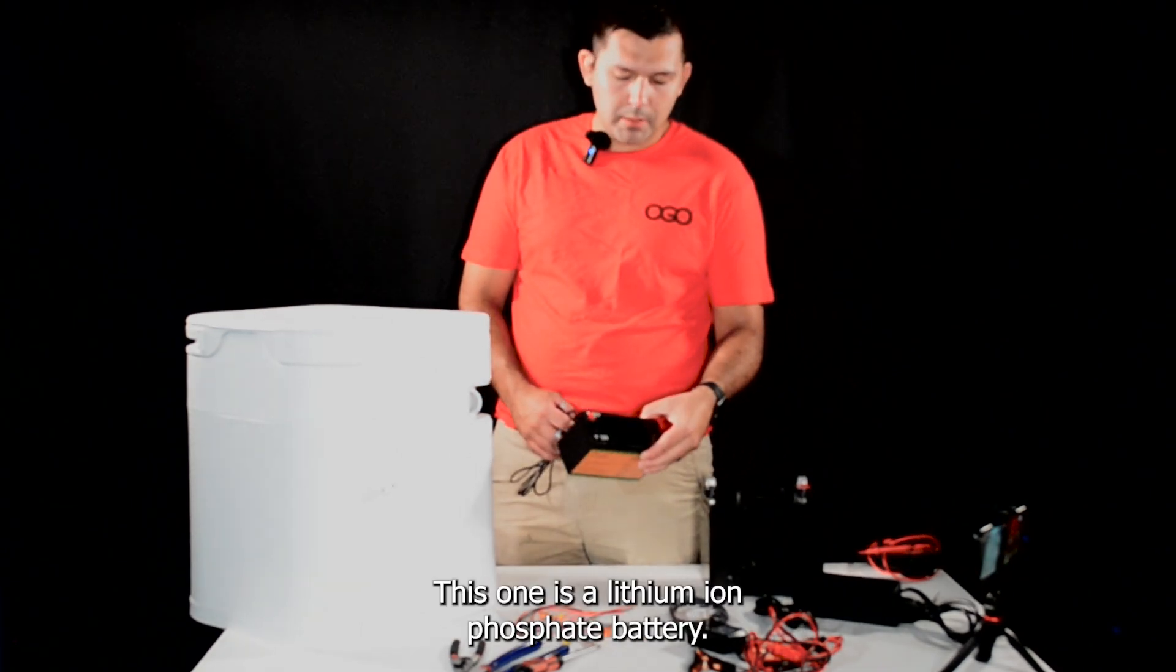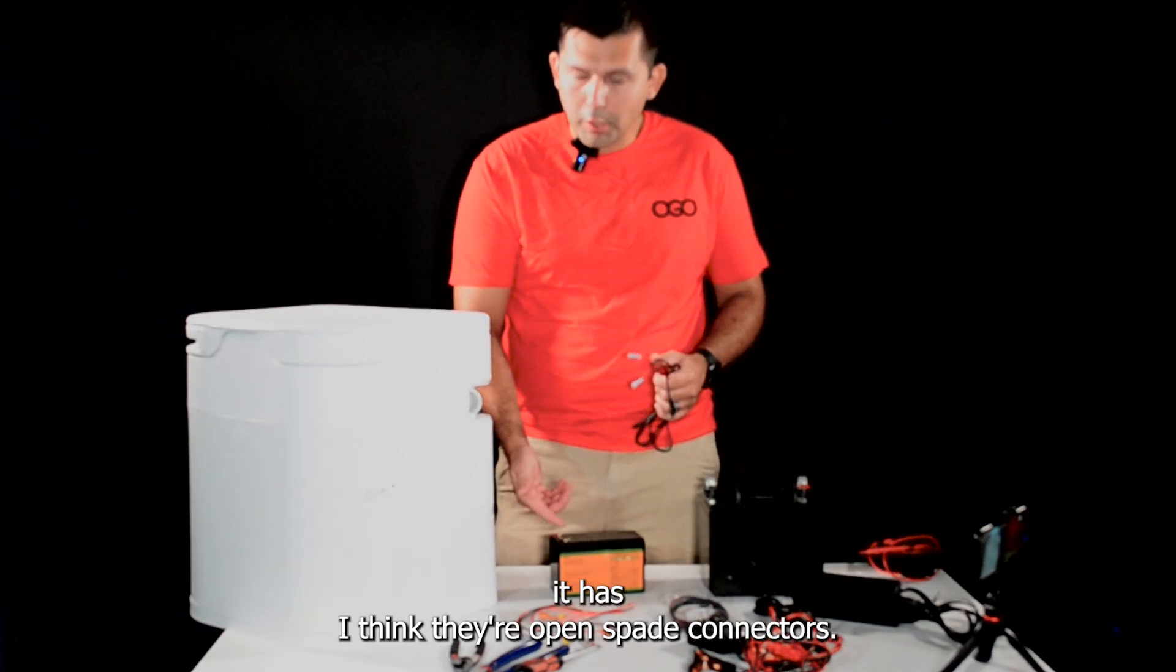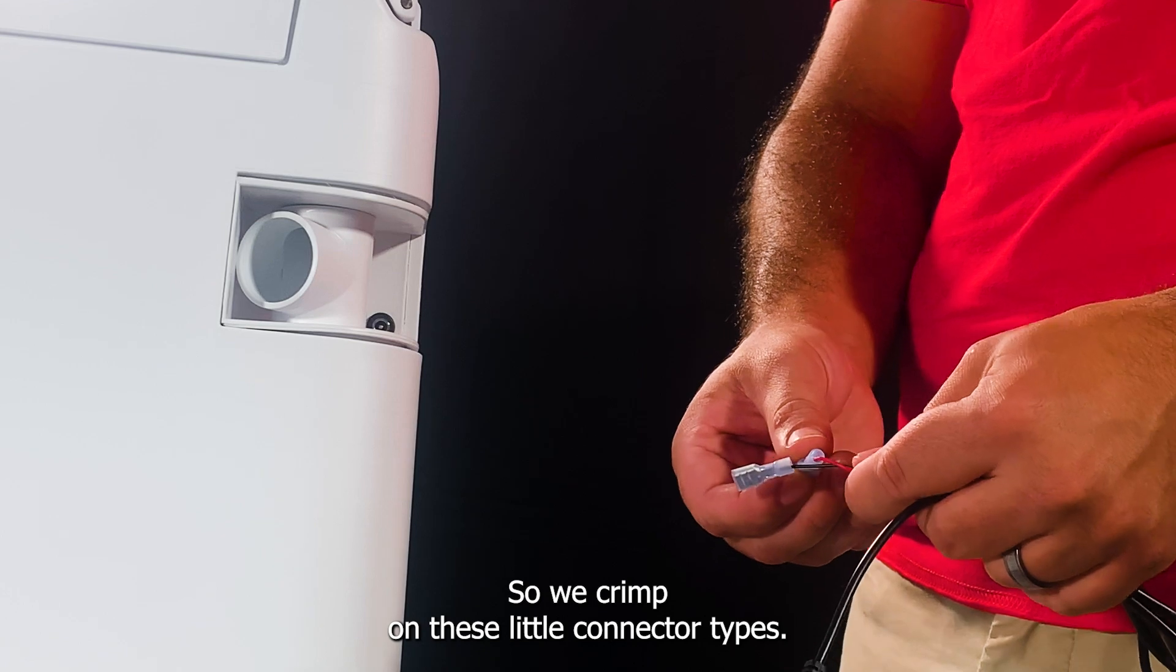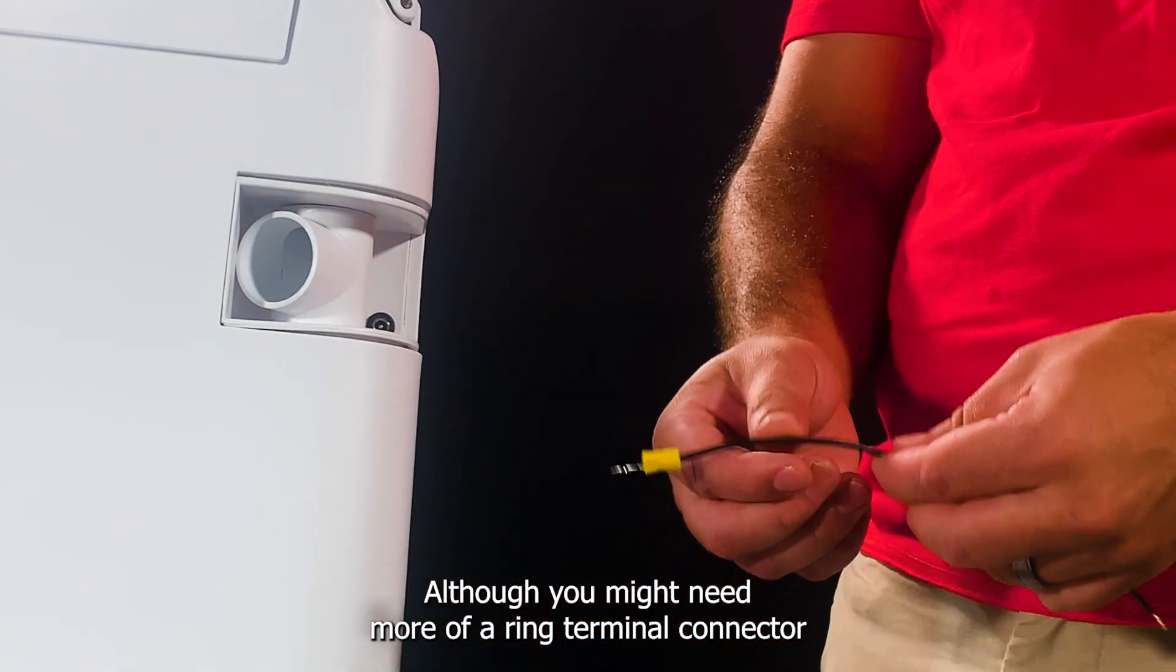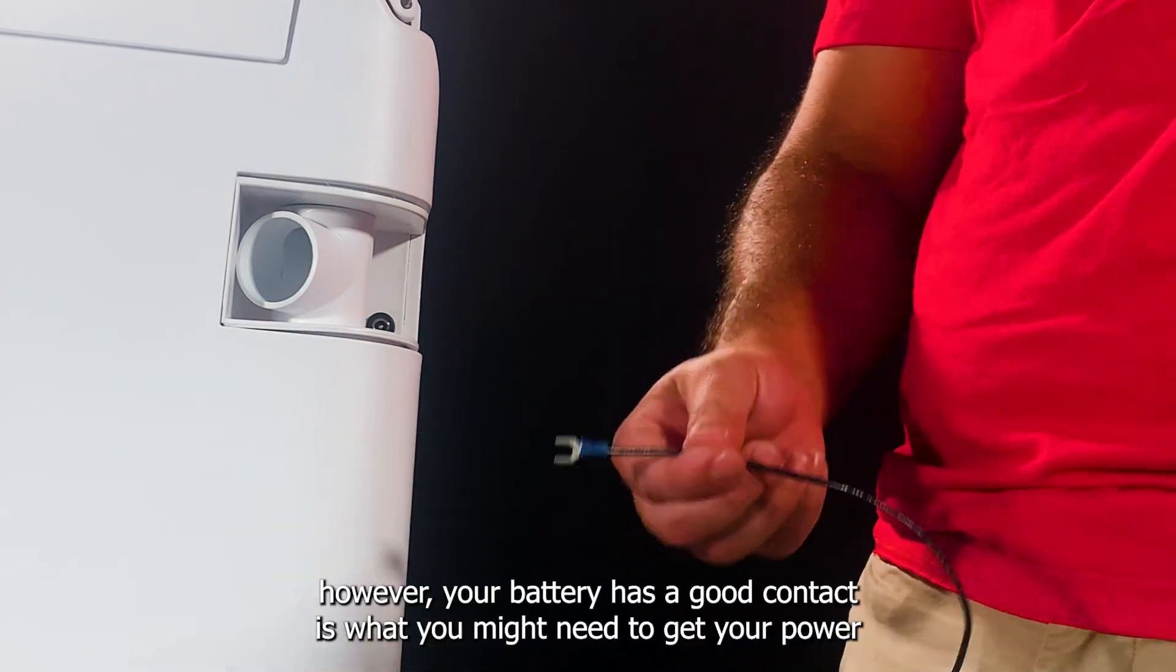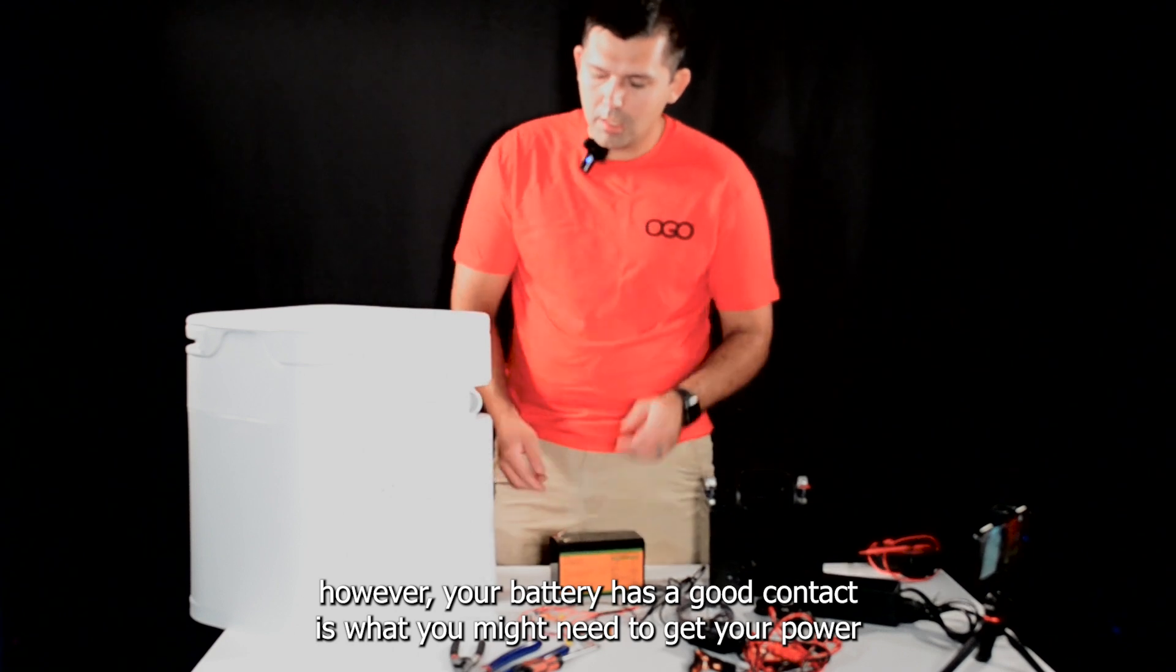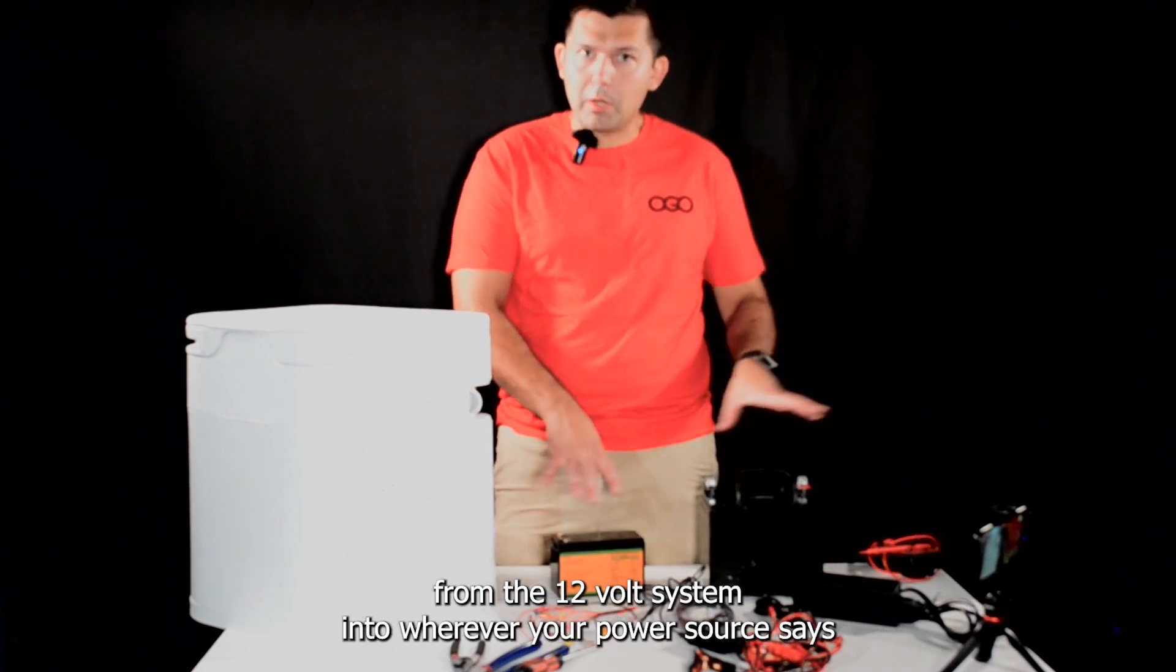This one's a lithium ion phosphate battery. It has, I think, open spade connectors, so we crimp on these little connector types, although you might need more the ring terminal connector or a more open spade. However your battery has a good contact is what you might need to get your power from the 12 volt system into wherever your power source is.